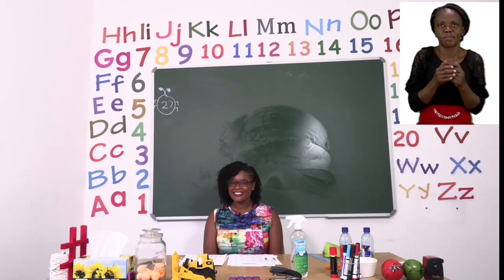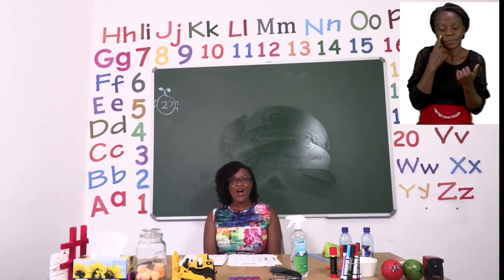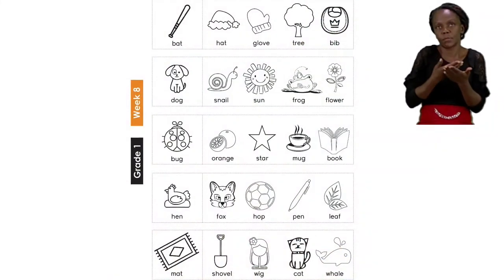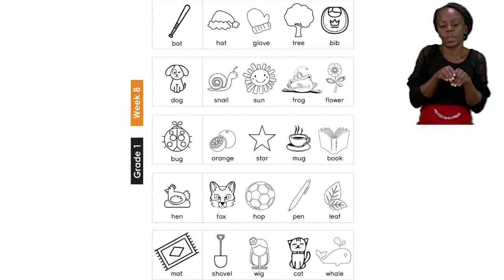Now let us take a look at our exercise on page 22. On page 22, we are going to be doing rhyming words. And this time we are going to color the rhyming word for each row.